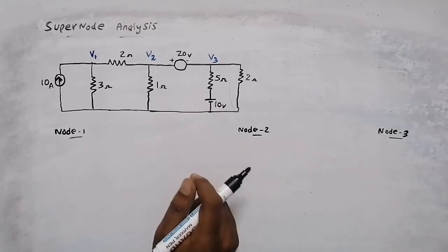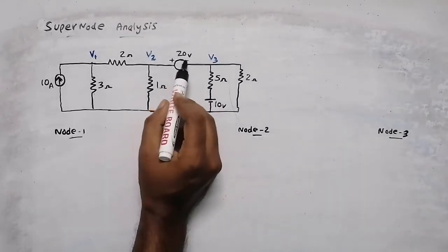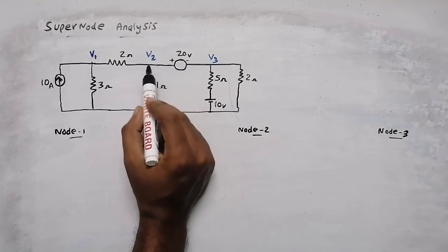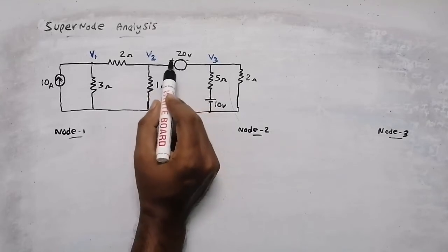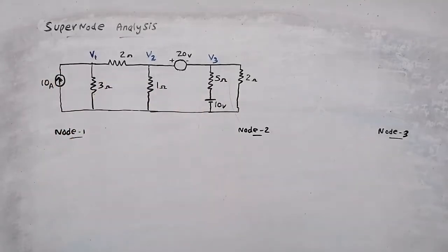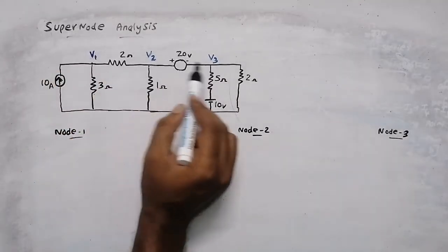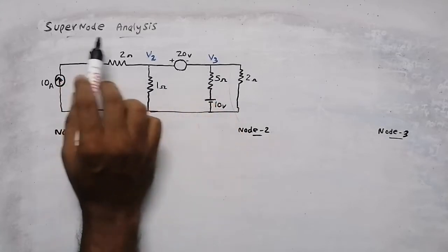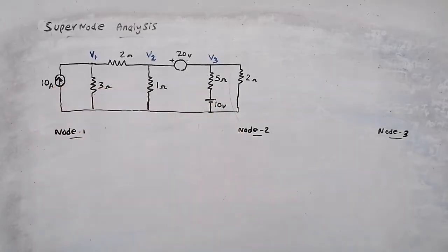We can see that there is a voltage source between two nodes. When there is a voltage source between two nodes, it is called supernode analysis, and we need to do supernode analysis.